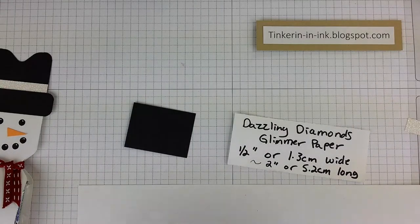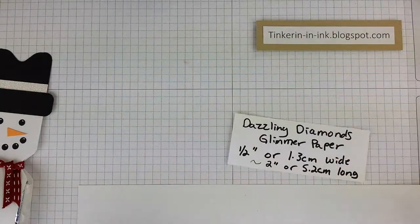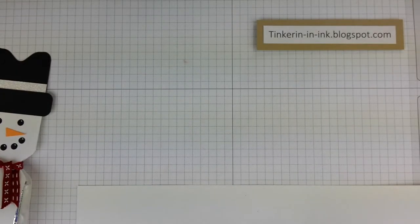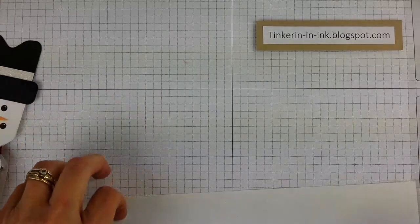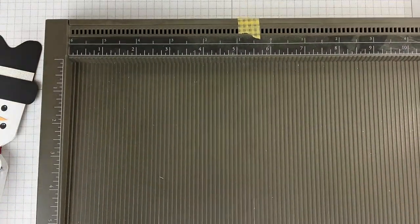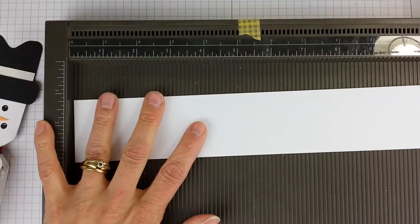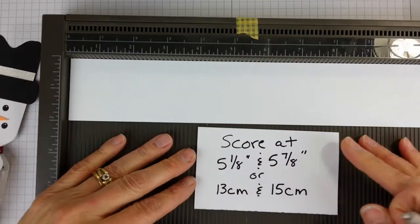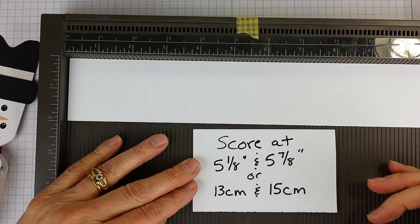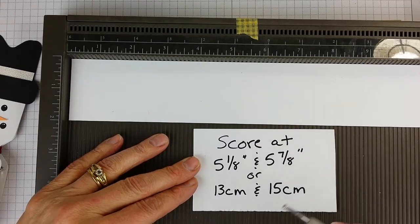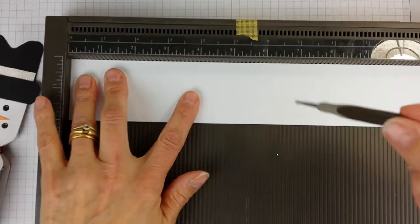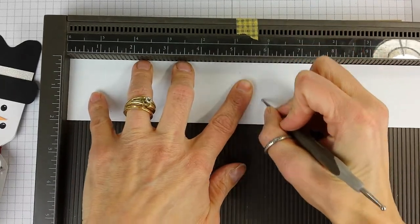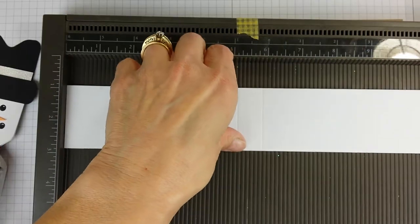So let's get going on the pieces. We're going to start with the scoring. So here is my scoreboard. We're going to score this, if you want the measurements, at 5 and 1 eighths and 5 and 7 eighths. And that's 13 centimeters and 15 centimeters. And we're done with the scoreboard.